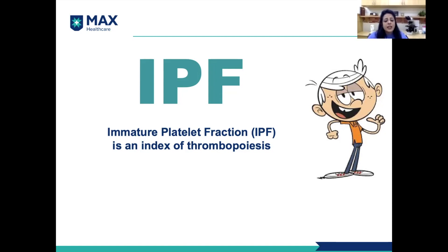In dengue, the platelet counts go down. The primary reason for that is platelet destruction, and also suppression of the megakaryocytes which produce the platelets. Once this offending factor is removed, the platelets begin to recover. The first indicator of recovery is the immature platelet fraction, as this component can be analyzed in the peripheral blood. We see an increase in the IPF, and we know that the platelets will start recovering.